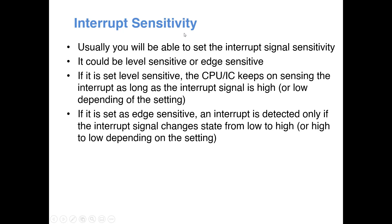The last topic is interrupt sensitivity. When a peripheral raises an interrupt signal, the CPU or interrupt controller can detect it based on two cases: edge-sensitive or level-sensitive — similar to edge-triggered and level-triggered flip-flops. If it is edge-sensitive, the CPU detects the interrupt only when the signal changes state from low to high or high to low, depending on register configuration. If it is level-sensitive, it detects when the signal is constantly high or constantly low. These settings are configurable through registers in the interrupt controller.